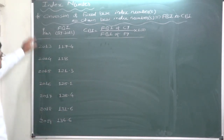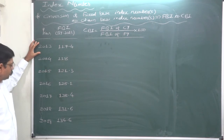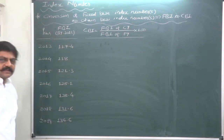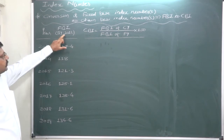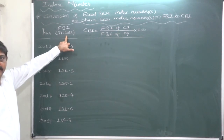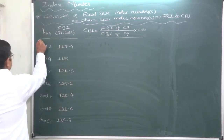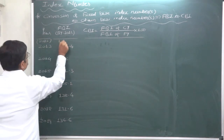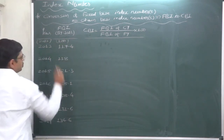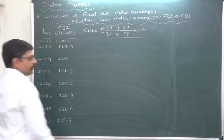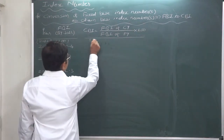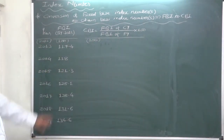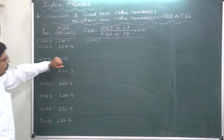Let's calculate for this given time series. The data runs from 2013 to 2019, and the fixed-base index numbers with base year 2012 are already given.